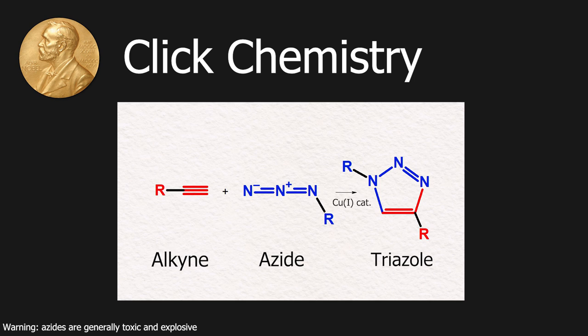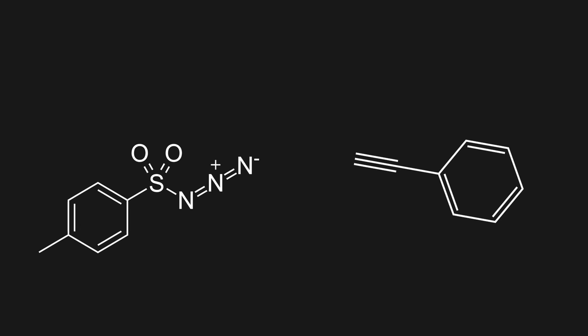In this reaction, an alkyne and an azide react under the influence of a copper catalyst to form a 1,4-disubstituted triazole. The reason it is called click chemistry is because this reaction happens at room temperature, in air, and at high yields. So it is basically as simple as clicking two molecules together.